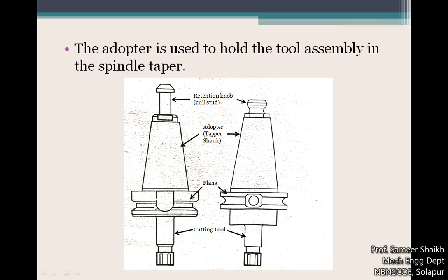The adapter, which is the tapered portion, is used to hold the cutting tool assembly inside the spindle taper. The function of the adapter is to hold the complete assembly inside the spindle taper so that when the spindle rotates at very high speed, the cutting tool also rotates with it.